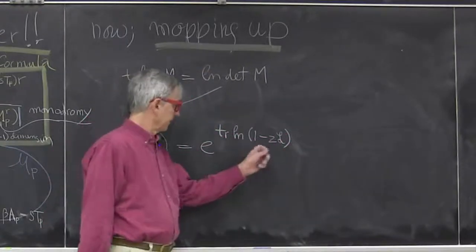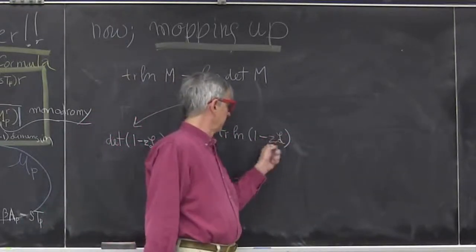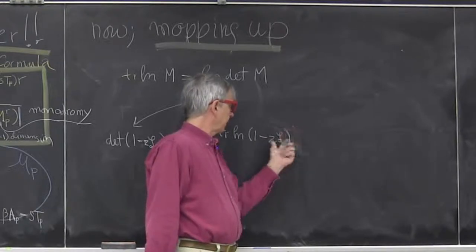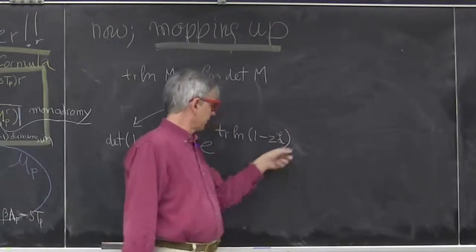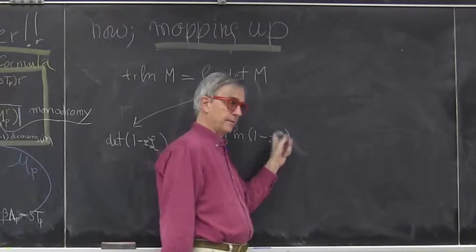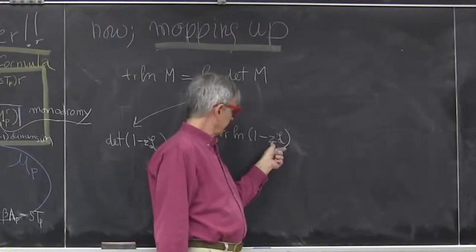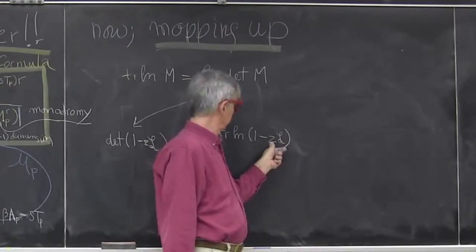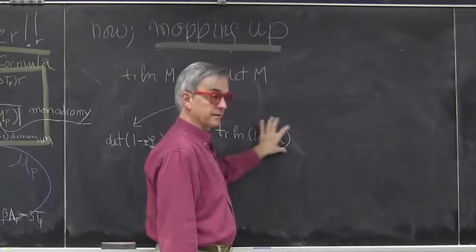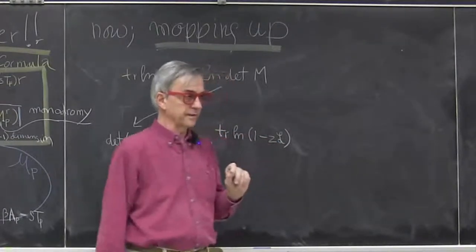Now, z is now a very useful handle. The operator itself, if you really care about such thing, can be bounded in some way. So if z is sufficiently small, this makes sense. This can be expanded as a Taylor series in z.